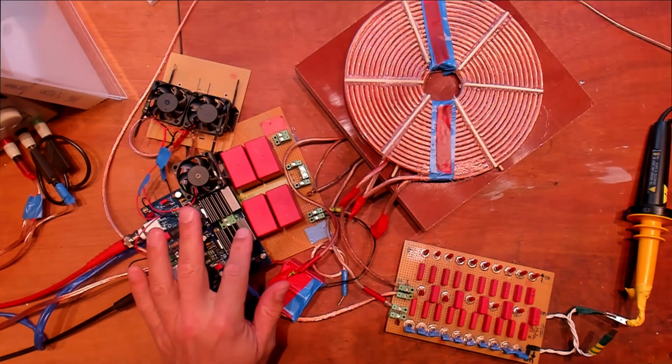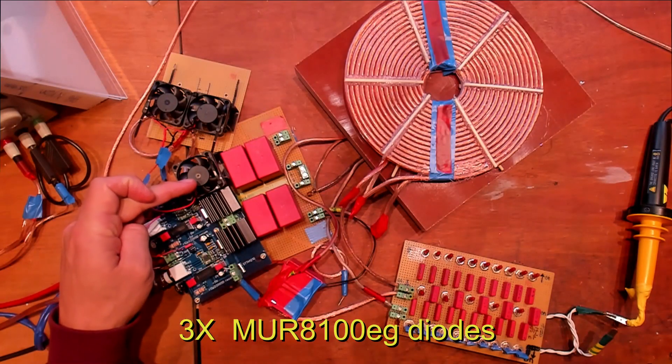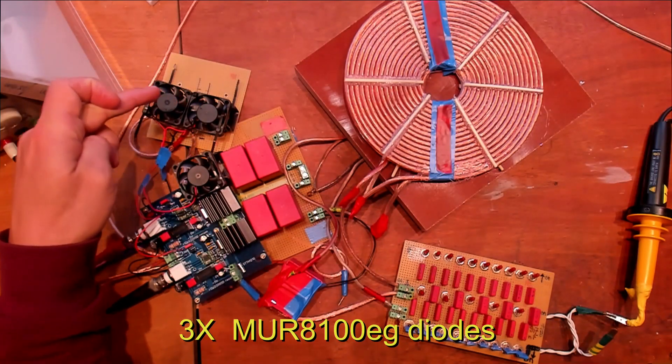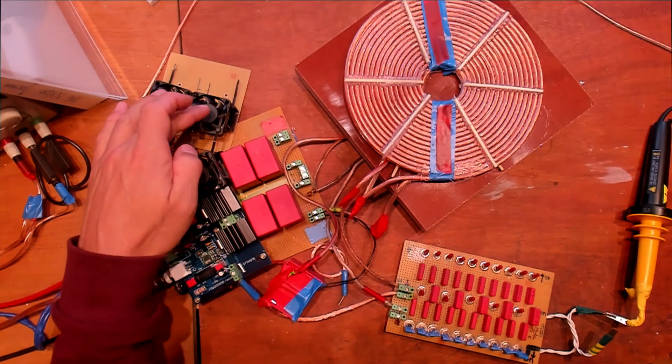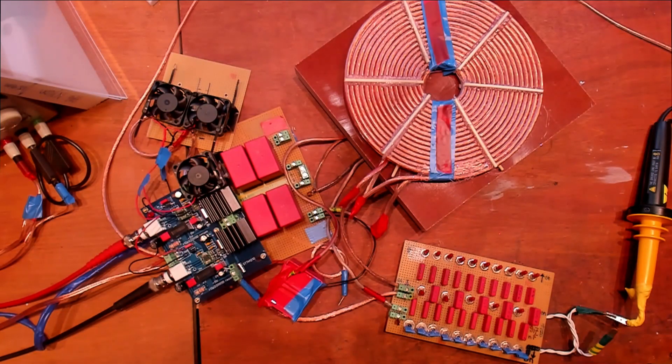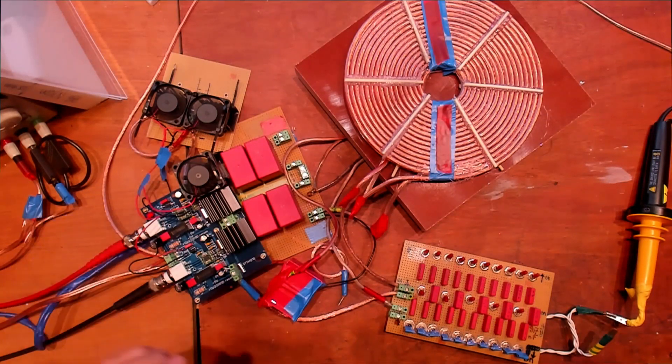What I've done is add three series diodes, and each diode can block a thousand volt impulses. I'll turn on the signal generator, and I'll turn off the fan and the system. I've got everything on right now.